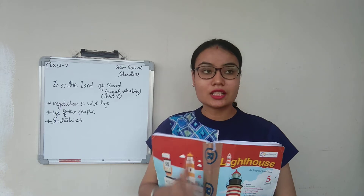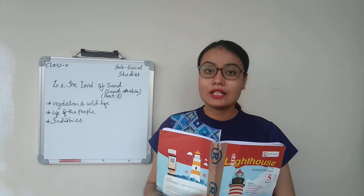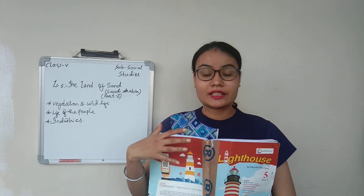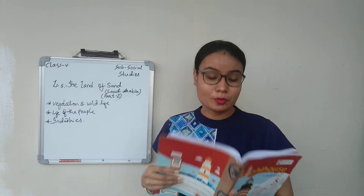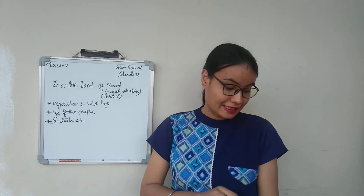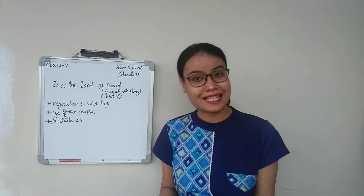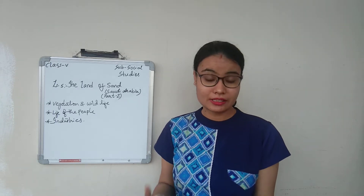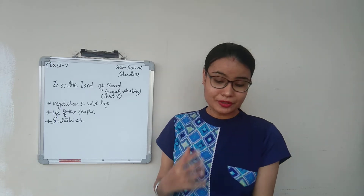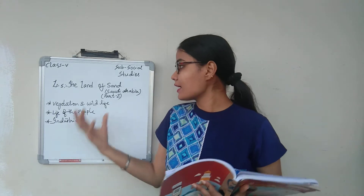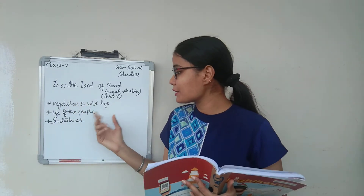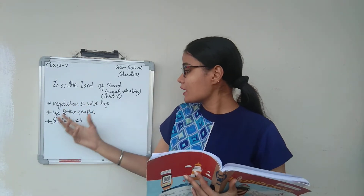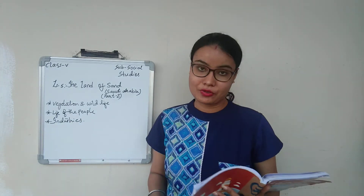We were discussing about the country Saudi Arabia — that it is a land of sand, in the sense it is a desert land. There is so much sand, and we covered the type of weather and climate, and the location. Today, a few more things are there related to Saudi Arabia: that is vegetation and wildlife, life of the people, and industries.